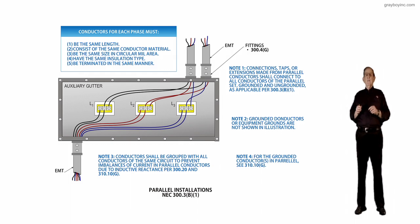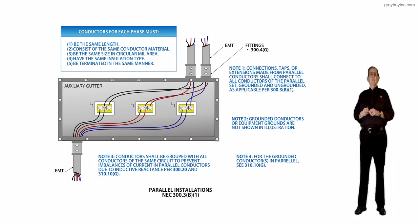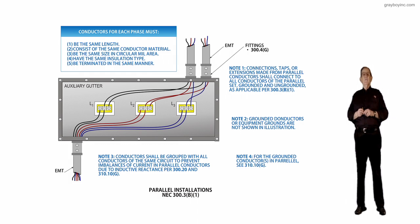That prevents what note three is talking about. Notice that the conductors in parallel in each set must meet the boxed-in information that talks about conductors for each phase, and it goes through the items one through five.